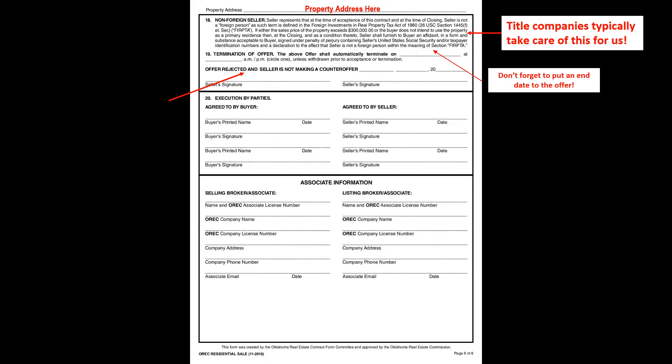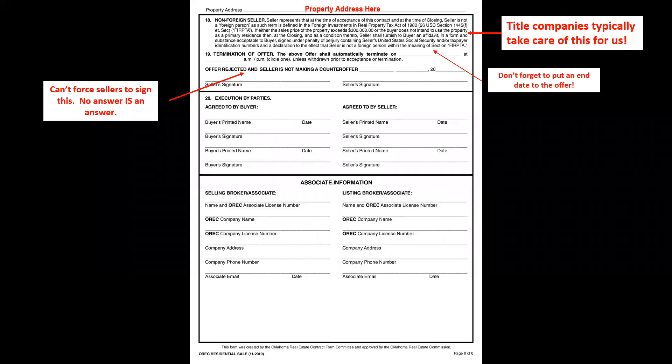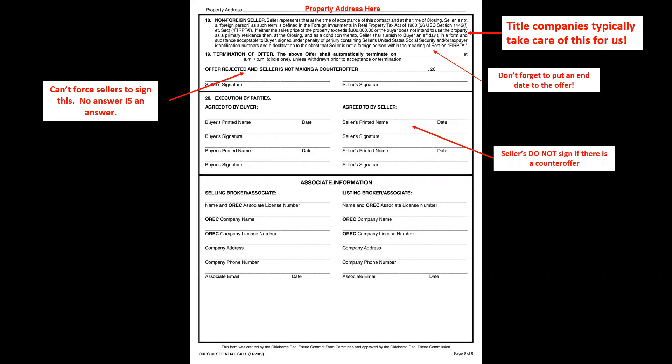If the offer is rejected and the seller is not making a counter offer, we cannot force sellers to sign the rejection acknowledgement — if there is no answer, no answer is an answer. The buyer will always sign this contract. If the seller chooses to make a counter offer, they will not sign here because they are not agreeing to these terms. Do not let your seller sign the buyer's signature section if they intend to counter.